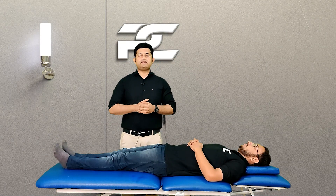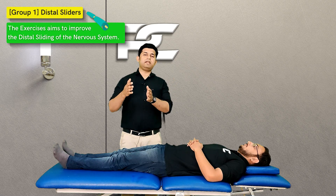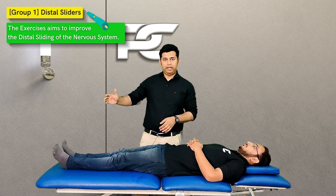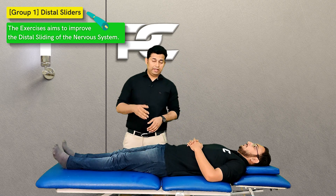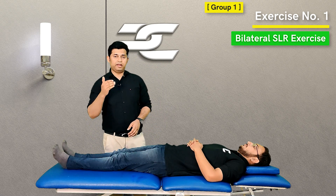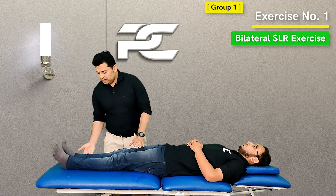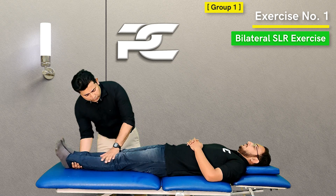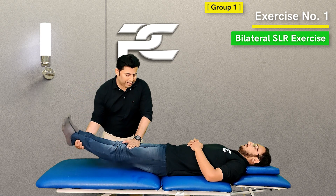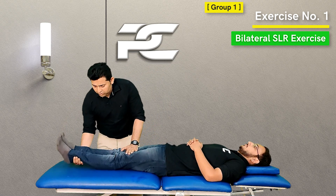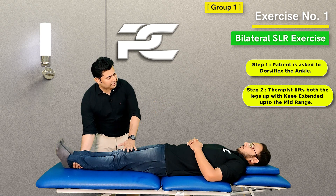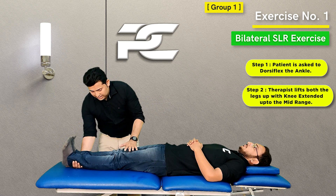The first group of exercises are known as the distal sliders. These exercises intend to improve the distal sliding ability of the nervous system. The first exercise in this group is known as the bilateral SLR exercise. The therapist is going to hold the position of the lower limbs similar to that of performing the bilateral SLR test. Before starting to elevate both legs, the therapist is going to instruct the patient to dorsiflex the ankles.